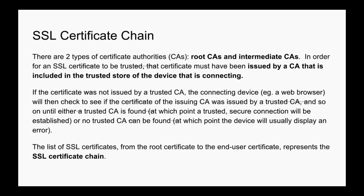Your browser contains a lot of certificate authorities. However, if the certificate was not issued by a trusted CA, the connecting device will then check to see if the certificate of the issuing CA was issued by a trusted CA, and so on — until either a trusted CA is found and a secure connection is established, or no trusted CA can be found, at which point the device will usually display an error.